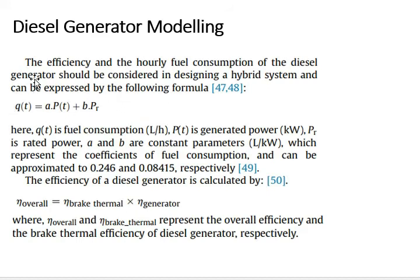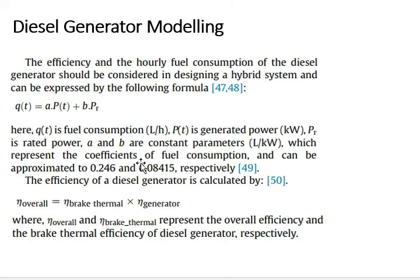Here, Q(t) is fuel consumption in L/h, P(t) is generated power in kW, P_R is rated power, and A and B are constant parameters representing the coefficients of fuel consumption, approximated to 0.246 and 0.08415 respectively. These values will be different for different generators.